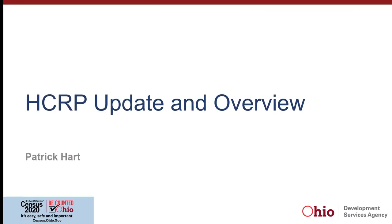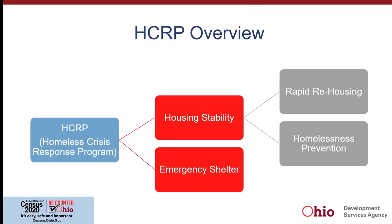Hello, everybody. Patrick Hart. So this is the HCRP and SHP application training. Some people get confused — HCRP entails two different elements. One is housing stability, one is emergency shelter. Sometimes people say HCRP just meaning housing stability. With housing stability, we have rapid rehousing and homelessness prevention.